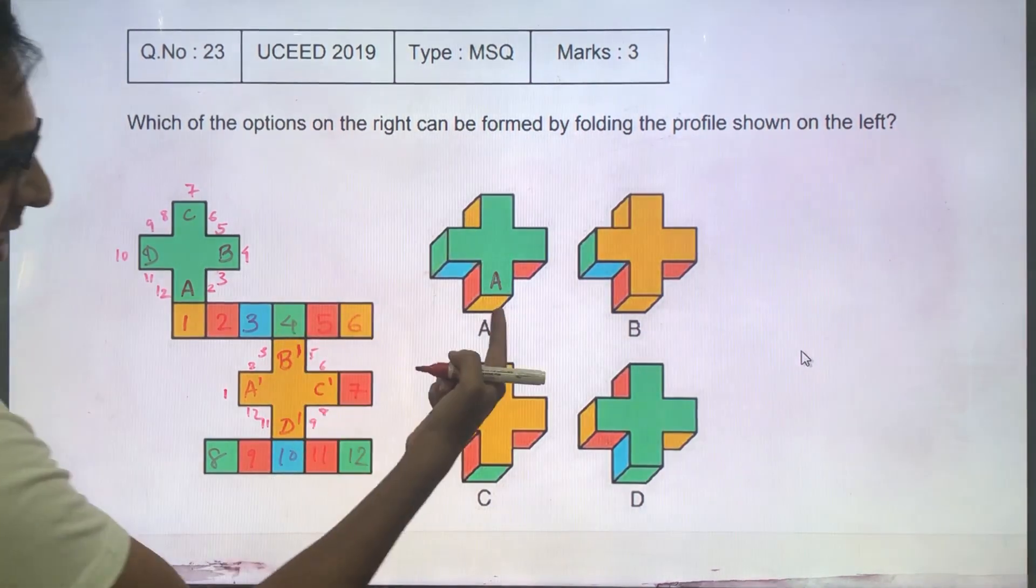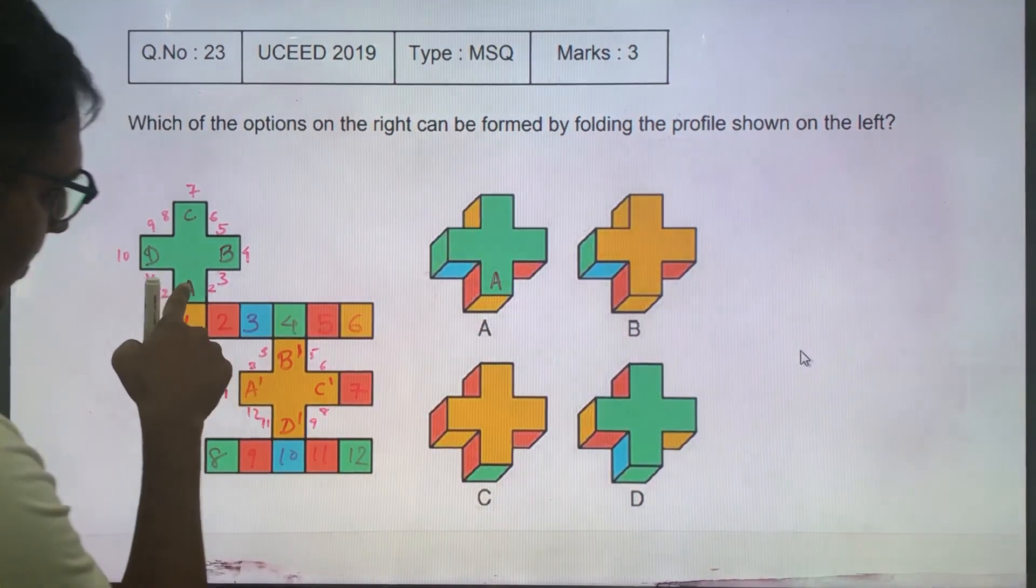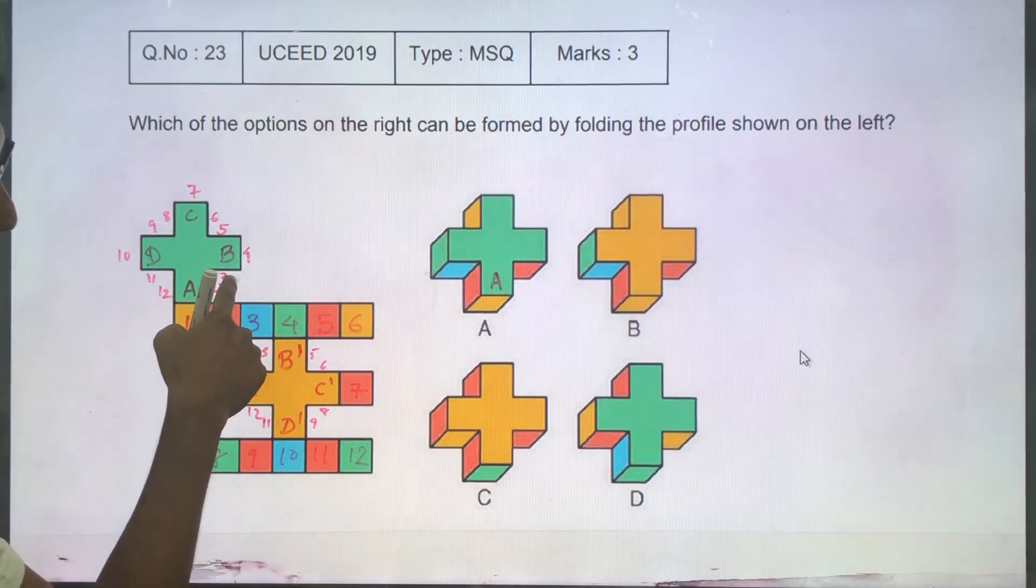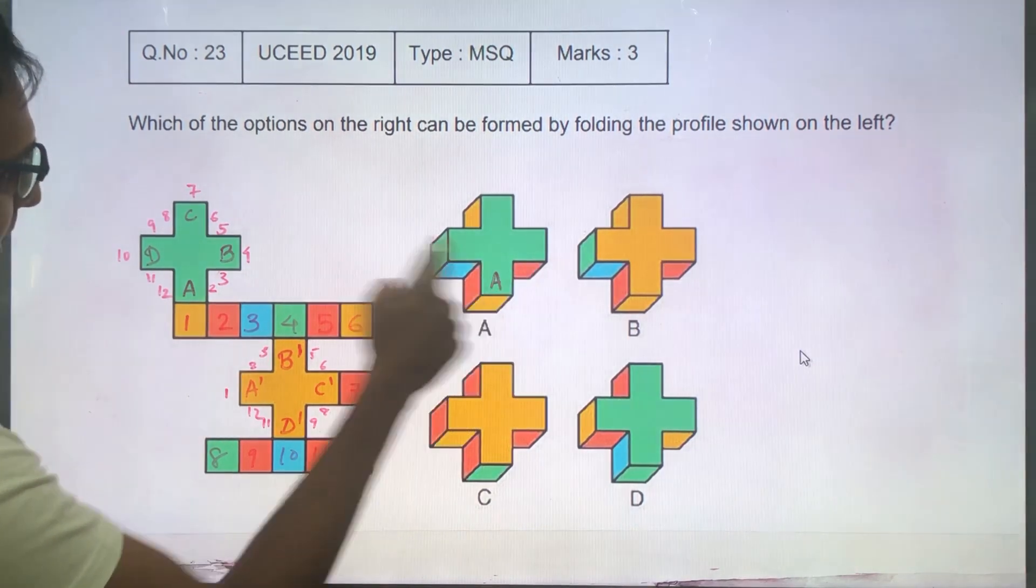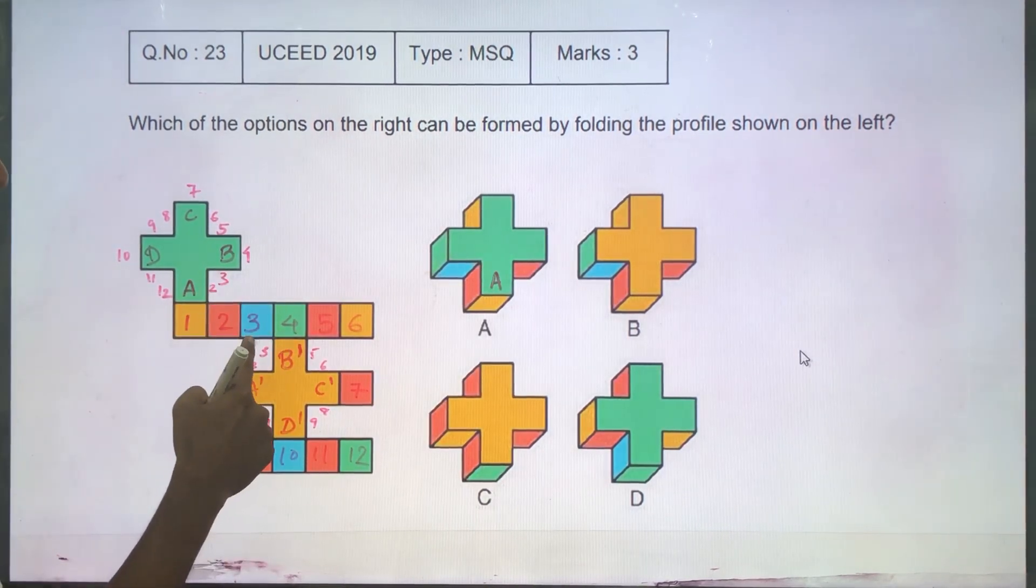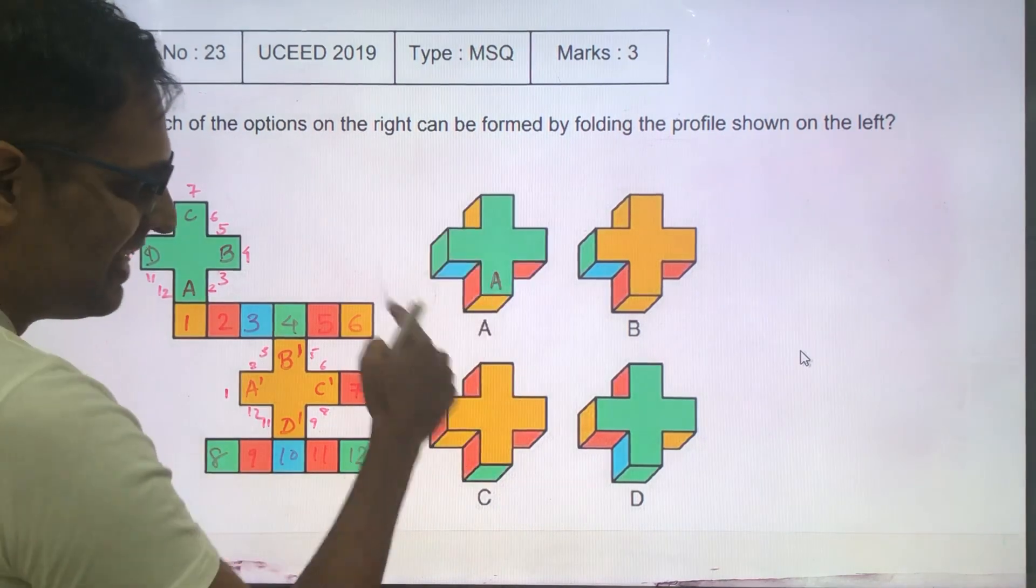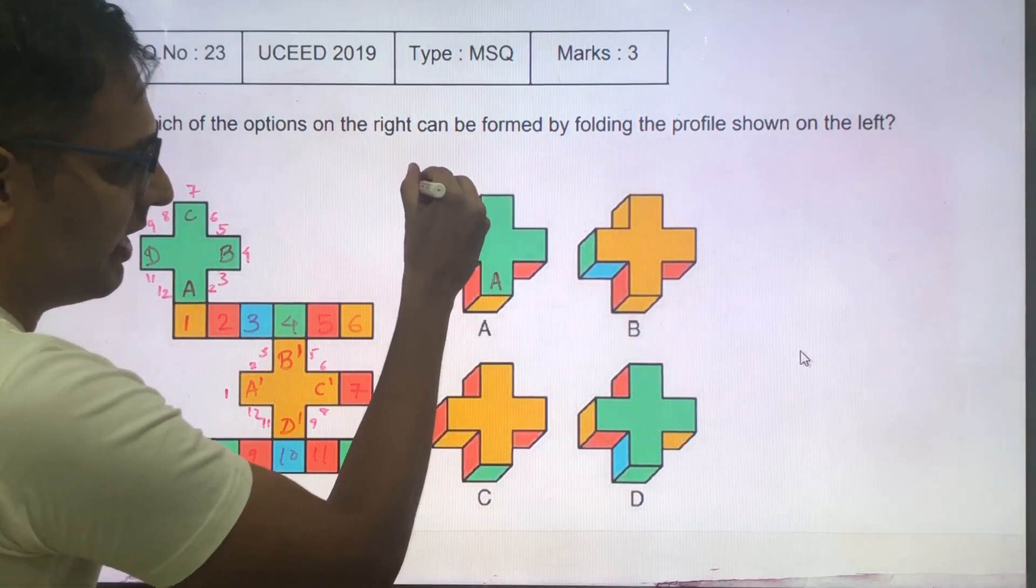Okay? You can even check another side, for example, this one will correspond to 3, this particular red piece. This corresponds to 3 here, but 3 is actually blue. So this is not a correct representation, hence this will be eliminated.